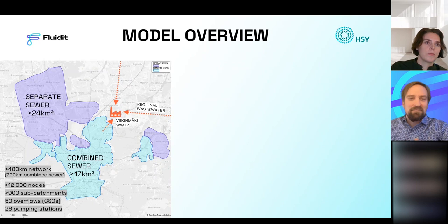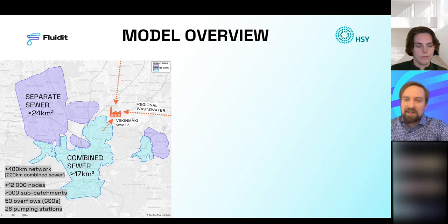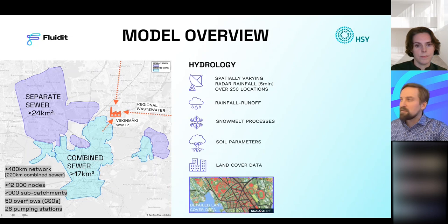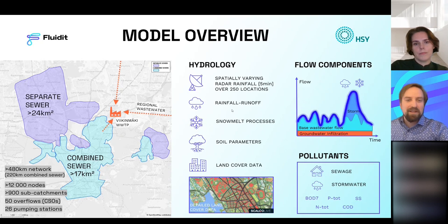Currently there is roughly 17 square kilometers of combined sewer system, with quite large separate sewer areas that connect through the combined sewer area, as well as regional flows taken into the Iikinmäki treatment plant calculations. From the hydrologic point of view, it's a very interesting model. We are using radar rainfall — this is the first time I think it has been used at this scale; it hasn't gone without problems, but at least we get better representation of spatial variability. We are modeling all rainfall runoff processes on the catchments, including snowmelt, with soil parameters estimated and many things derived from land cover data.